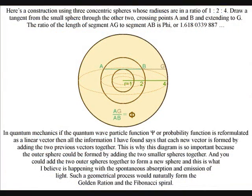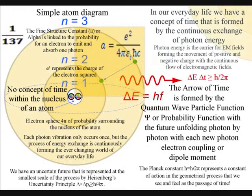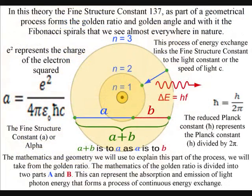This is why this diagram is so important: because the outer sphere could be formed by adding the two smaller spheres together. And you could add the two outer spheres together to form a new sphere, and this is what I believe is happening with the spontaneous absorption and emission of light.